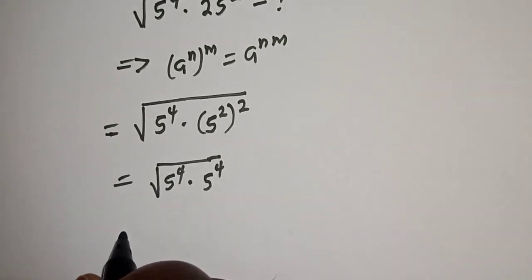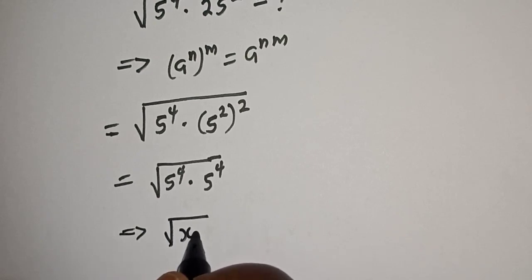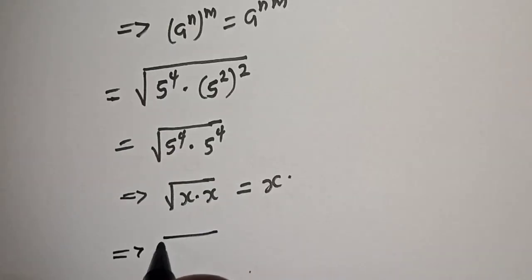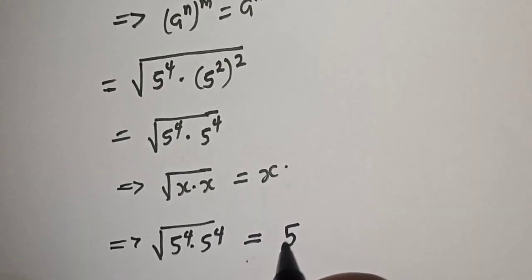Also note this: if you have square root of x multiplied by x, this is equal to x. Square root of 5 raised to power 4 multiplied by 5 raised to power 4 is equal to 5 raised to power 4.